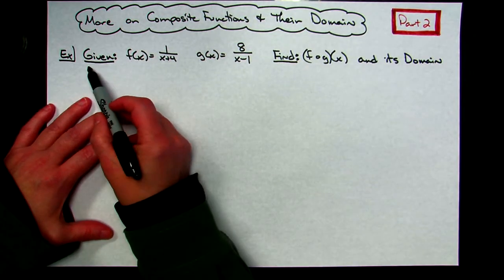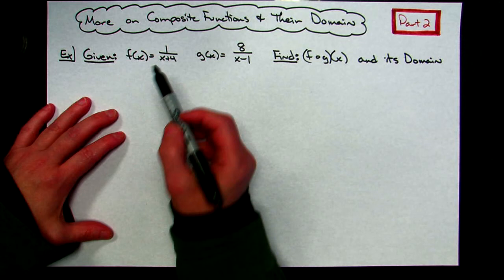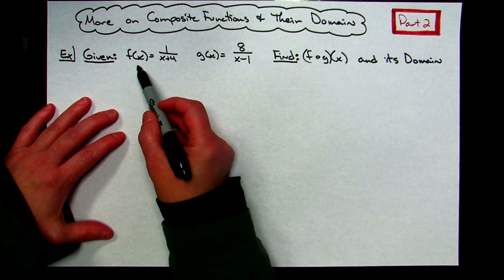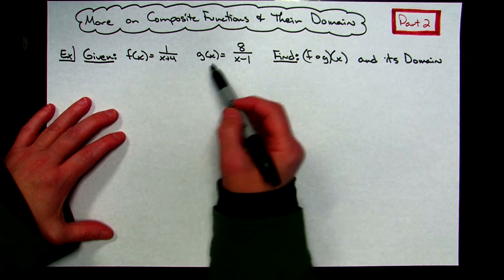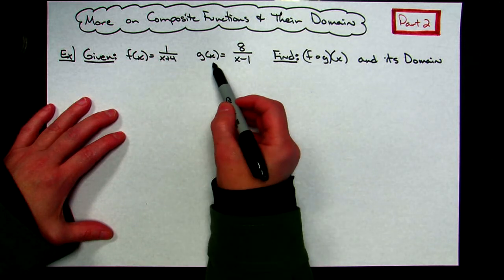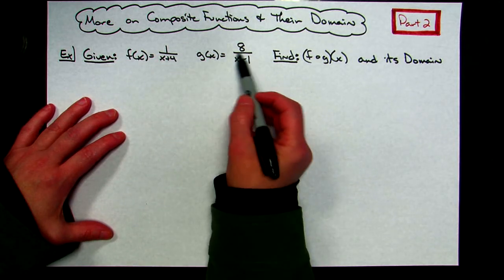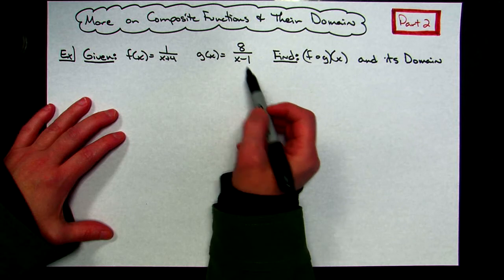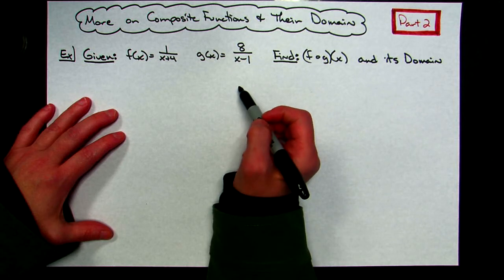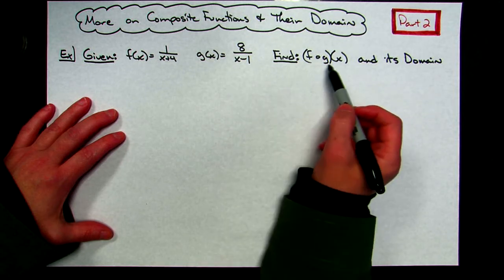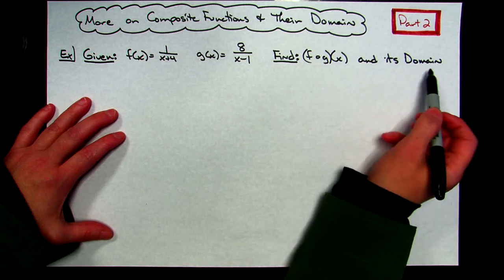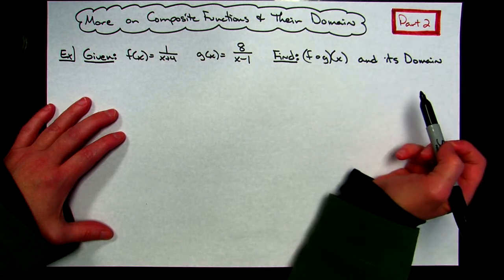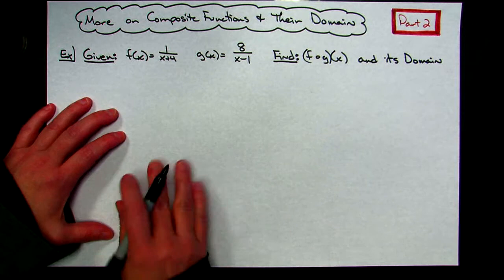In this example, let's say that we are given a function f of x is equal to 1 over x plus 4, and our g of x function is 8 over x minus 1. They are asking us to find the composite function and then find its domain.